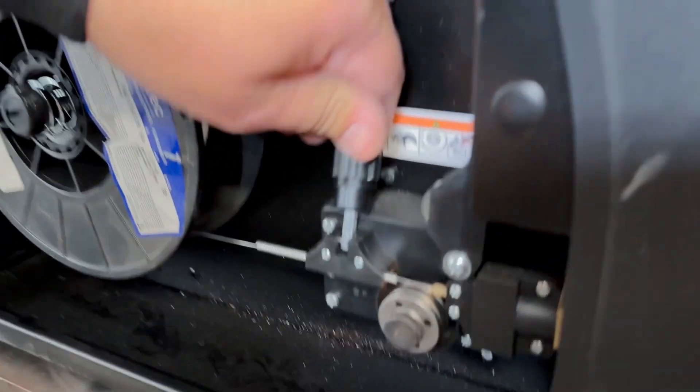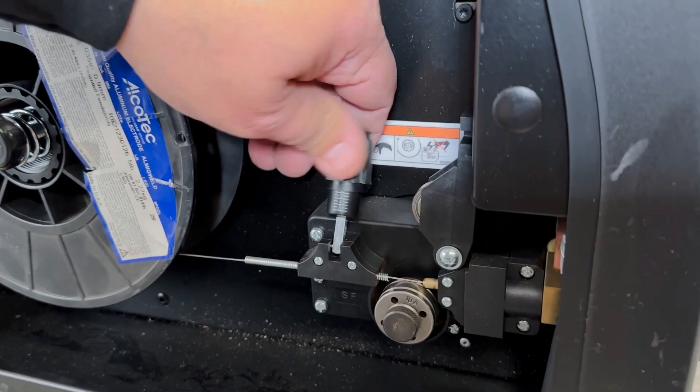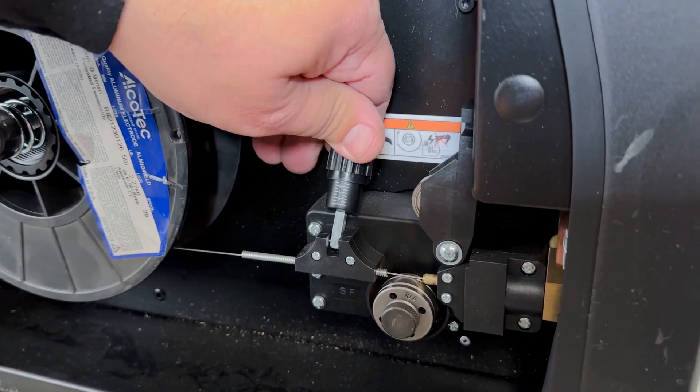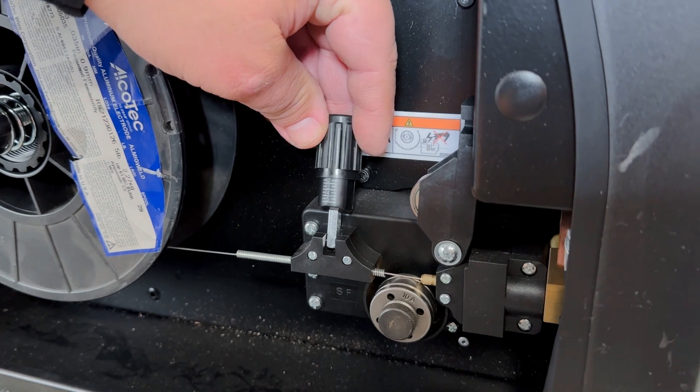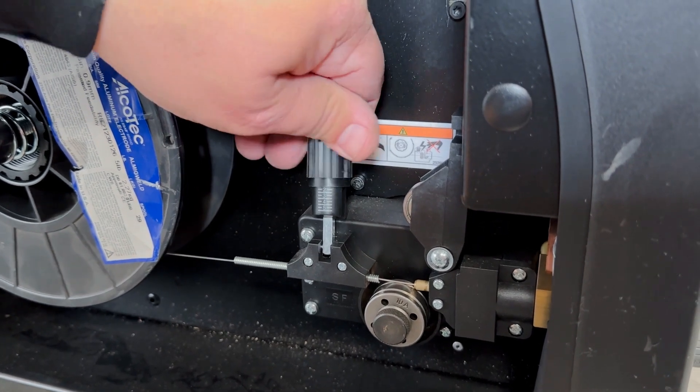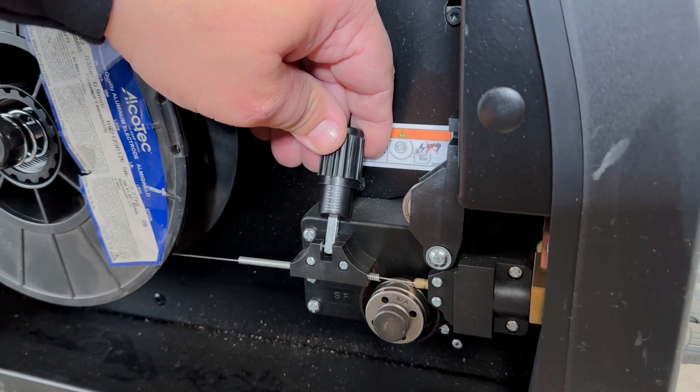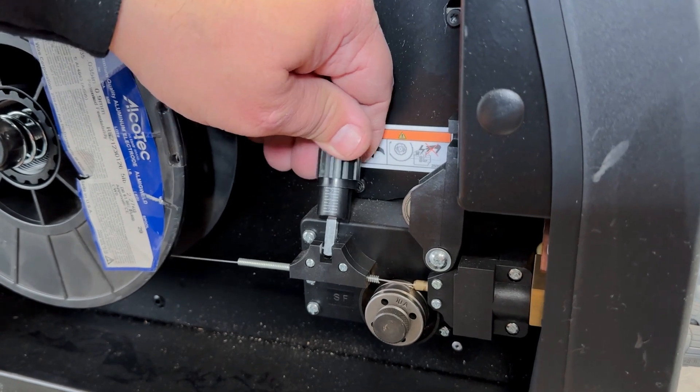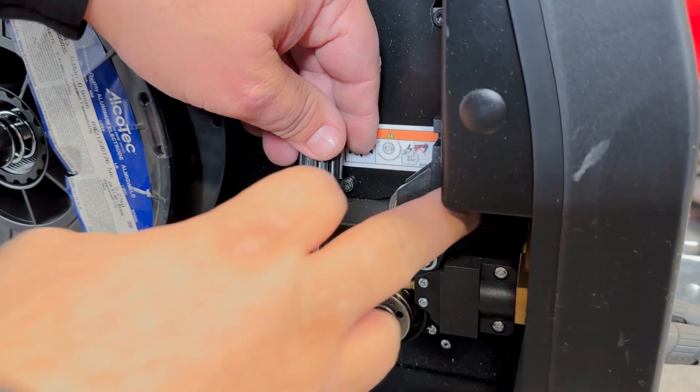Reduce your drive roll pressure so you don't crush the aluminum wire. You want to have a drive roll pressure about one and a half, under two for sure.